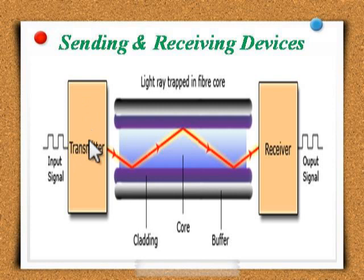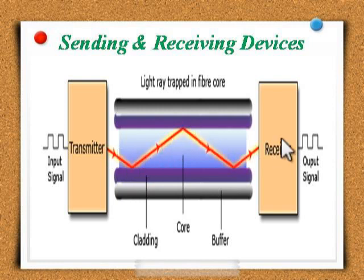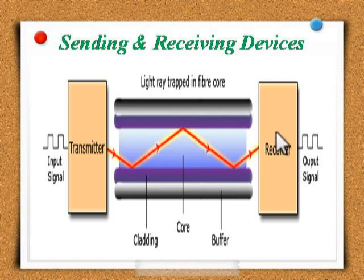Sending and receiving devices: the sending computer passes an electronic pulse to the transmitter. The transmitter uses an LED or laser which converts the electronic pulse into a light pulse. Then the light pulses are carried by the fiber optic cable to the receiver. The receiver uses photodiodes which convert the light pulses back to electronic pulses.